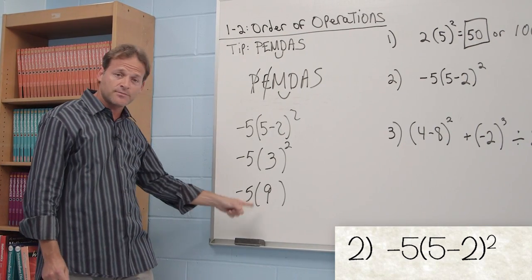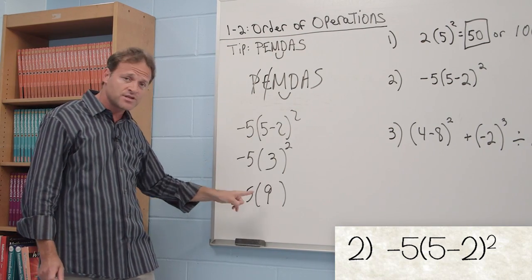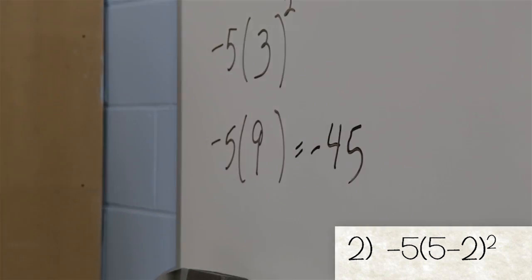Negative 5 times positive 9. If you'll recall, negative times positive is always negative. 5 times 9 is 45. Therefore, the answer is negative 45.